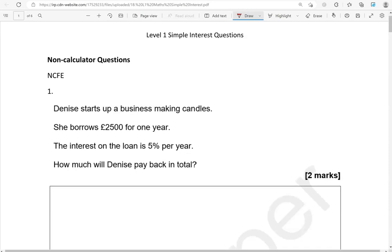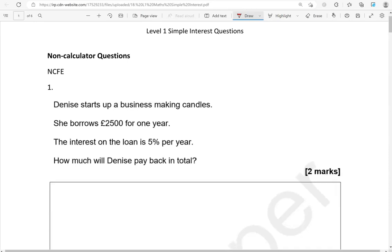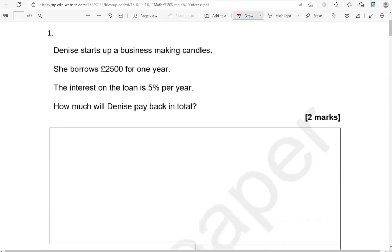Here is the first one. Denise starts up a business making candles. She borrows £2,500 for one year. The interest on the loan is 5% per year. How much will Denise pay back in total? So the amount she borrowed is £2,500, and I'm going to represent it here. The interest on the loan is 5% per year.